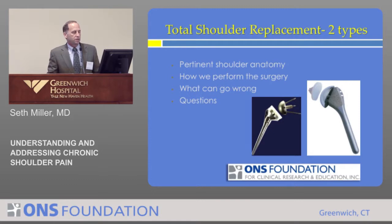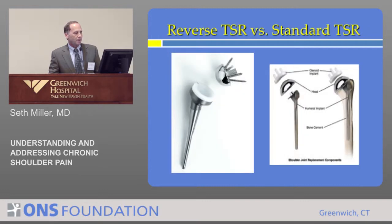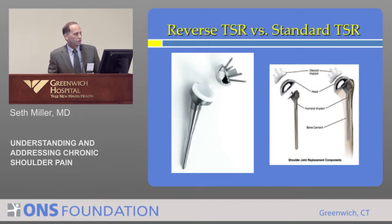Those two images show a reverse shoulder replacement and a primary shoulder replacement. On the left is the reverse shoulder replacement, where the ball and socket are switched around in their positions. On the right is a diagram of a primary shoulder replacement, which is modular — there are different size heads, stems, and sockets that we implant.